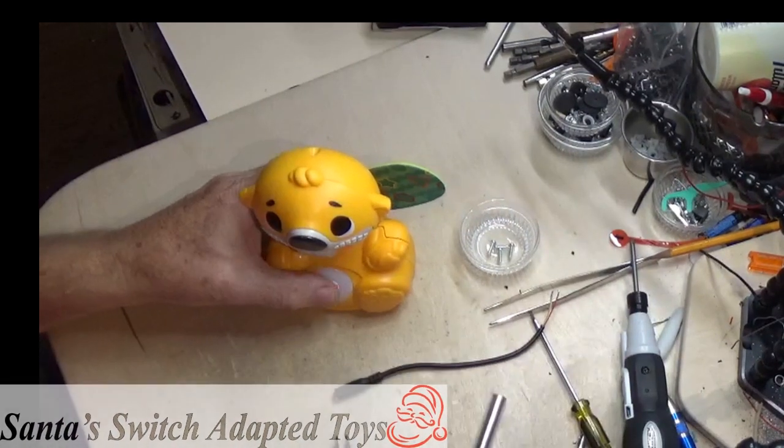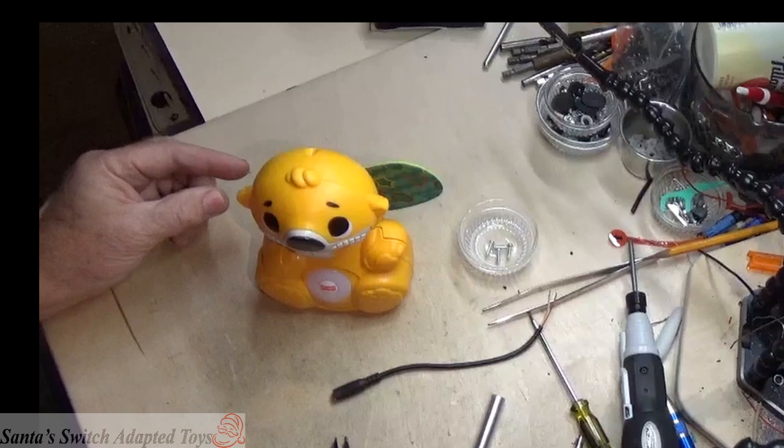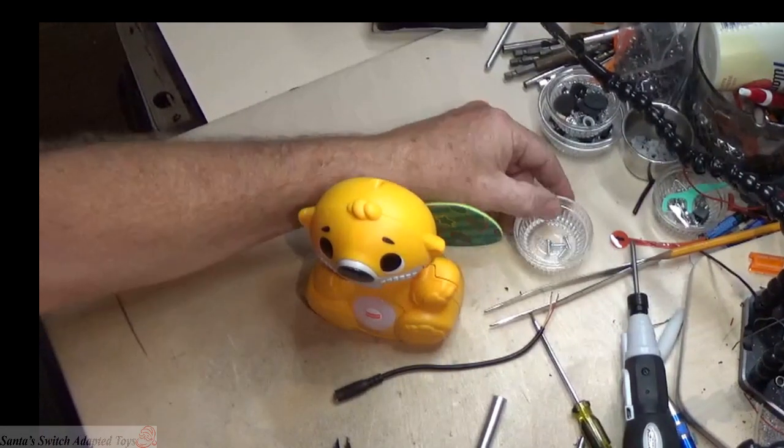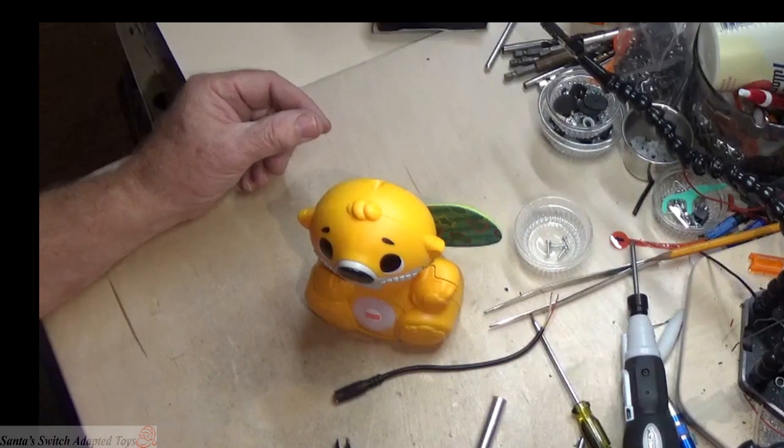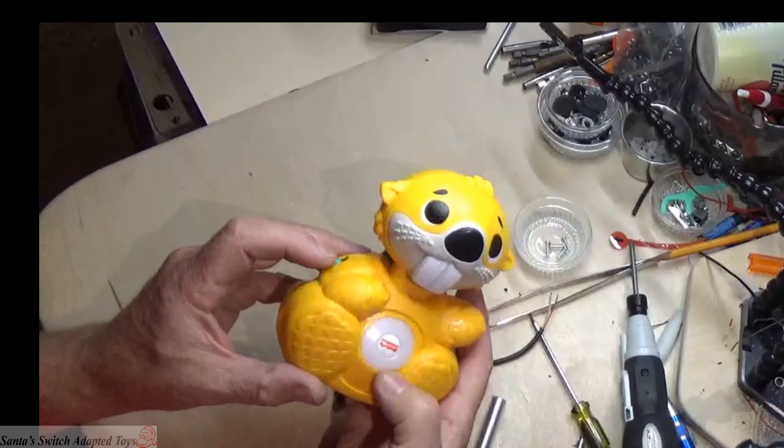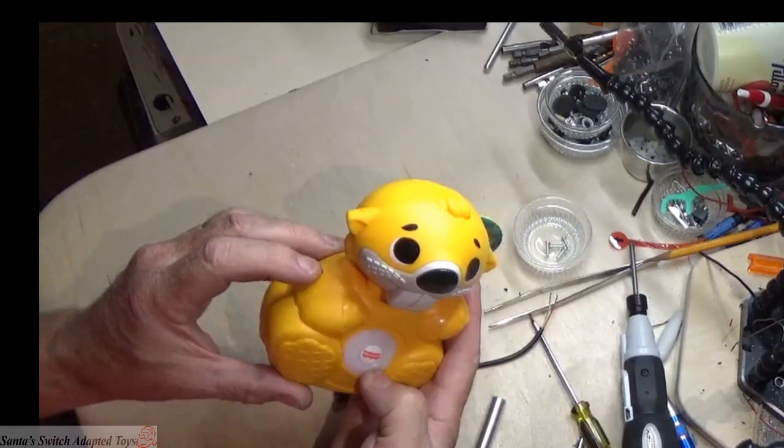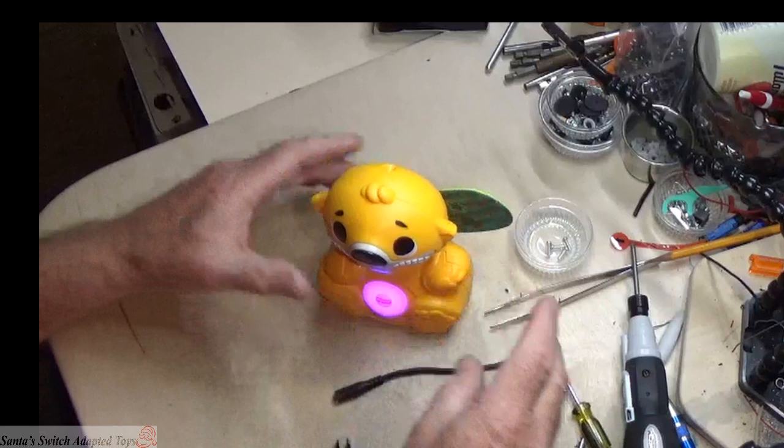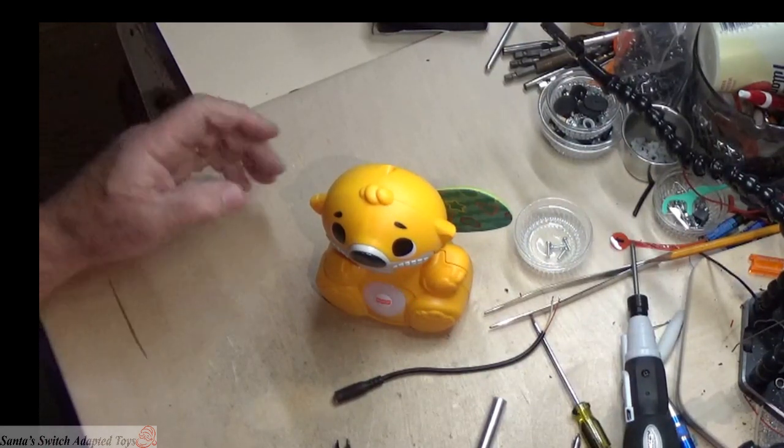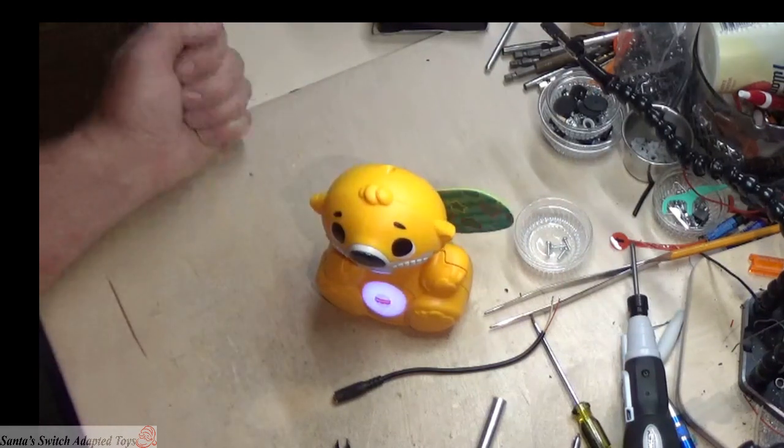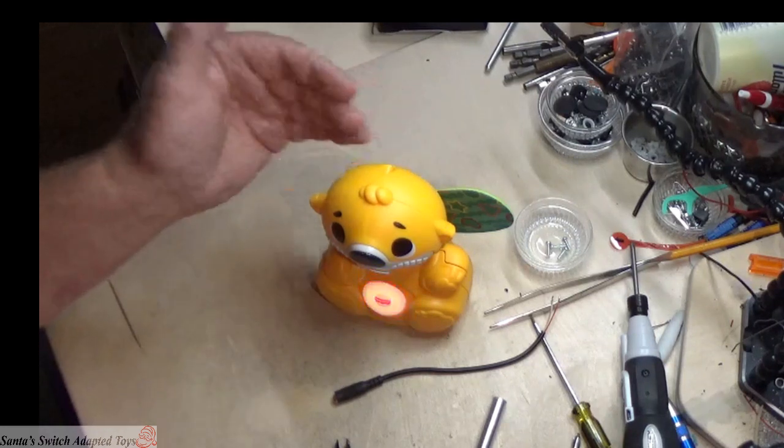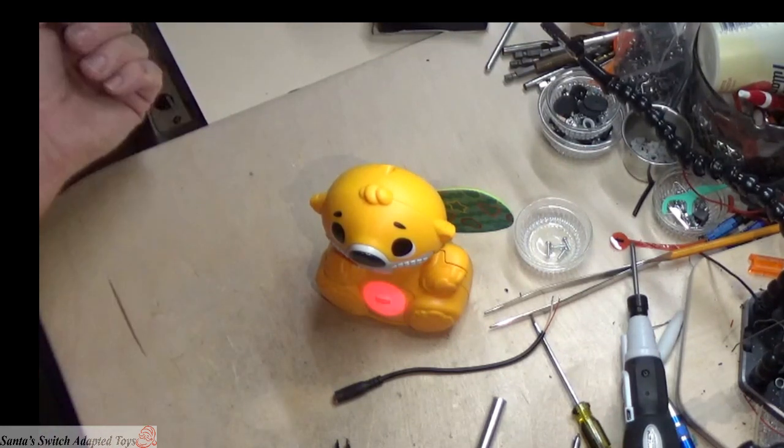Hello everybody, this is Santa Jerry from Santa's Switch Adapted Toys, and you're on the over-the-shoulder camera view while we do an adaptation of one of the Fisher-Price Linkimals toys. This is the Beaver, and it comes with a switch on it that turns him on. The way this toy is activated from the factory, you punch his head and his tail wags out because that's a mechanical movement, but then the switch inside activates the toy.